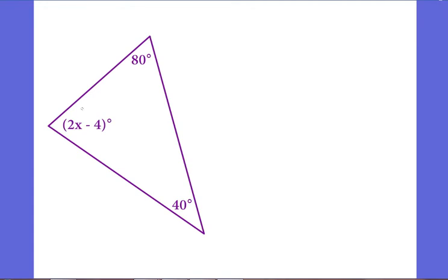This one's a little bit different. I don't have an entire angle missing. This angle is 2x minus 4 instead of just a letter. So I'm going to set this up. I know that 2x minus 4 added to my 80 degree angle, added to 40 degrees, equals 180. This is an equation that's easily solvable.